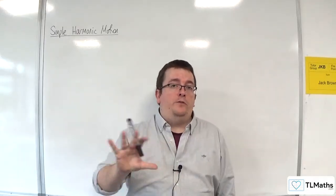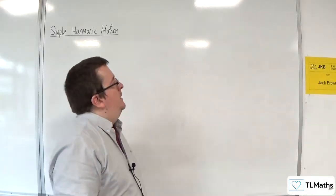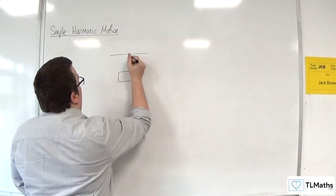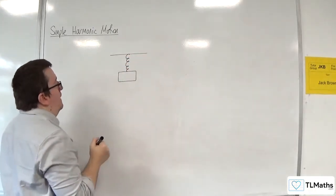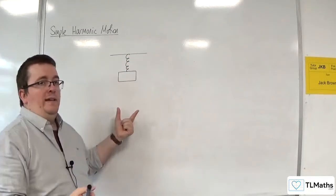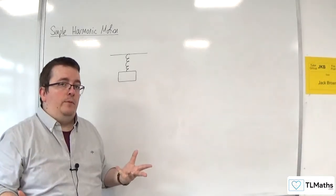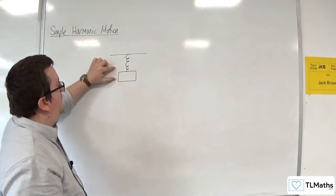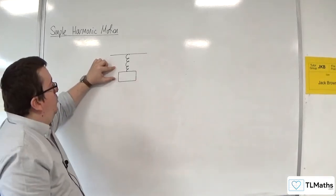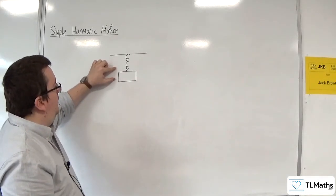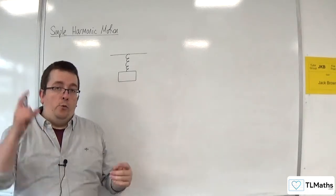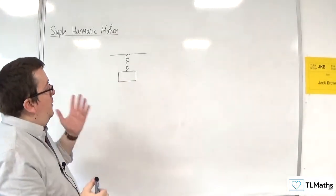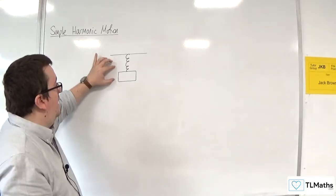Differential equations can be used to model a whole load of different scenarios. If you considered a weight attached to a spring and you pulled the weight down slightly, what would you expect to happen? Well, you would probably be thinking that in pulling it downwards it would spring back upwards — not to its original position, but back upwards — and then would keep going like that. You would expect that to wear off and it would get back to where it started, but if we looked at a very simple model, it might just keep on doing that forever and ever.